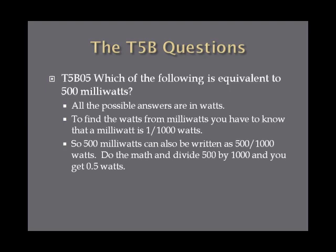Which of the following is equivalent to 500 milliwatts? On the exam, all the possible answers are in watts. A milliwatt is equal to 1/1,000 of a watt, so there are 1,000 milliwatts in a watt. 500 milliwatts can be written as 500 over 1,000 watts. Dividing 500 by 1,000 gives you 0.5 watts.